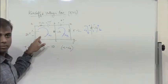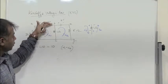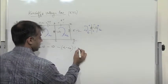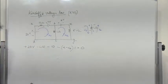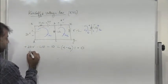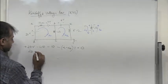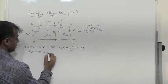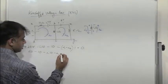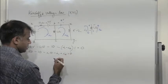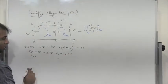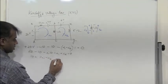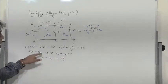Considering the first loop, current flows from B to C — a drop — so we write minus (I1 minus I2) times 1 equals zero. This gives: 20 minus 10 minus I1·10 minus (I1 minus I2)·1 equals zero, which simplifies to 11·I1 minus I2 equals 10. This is equation 1.